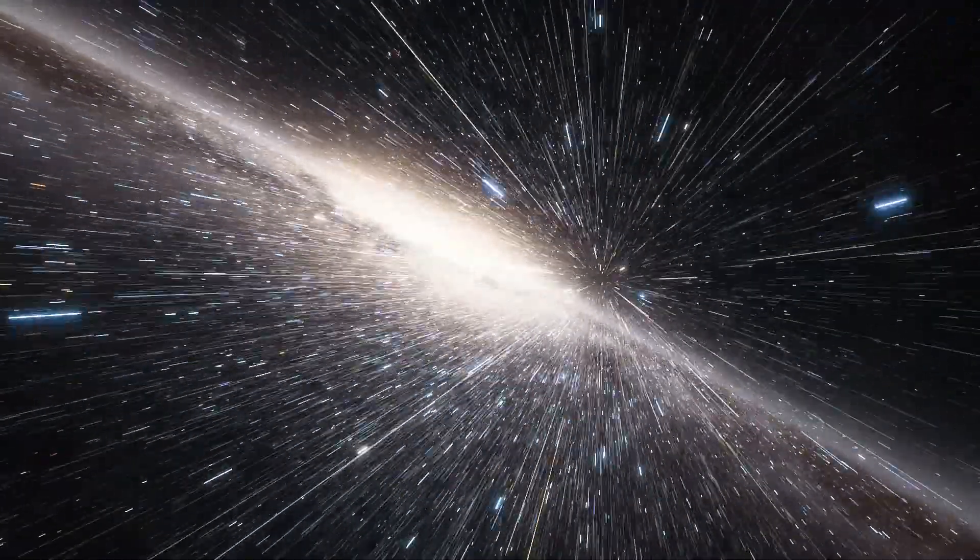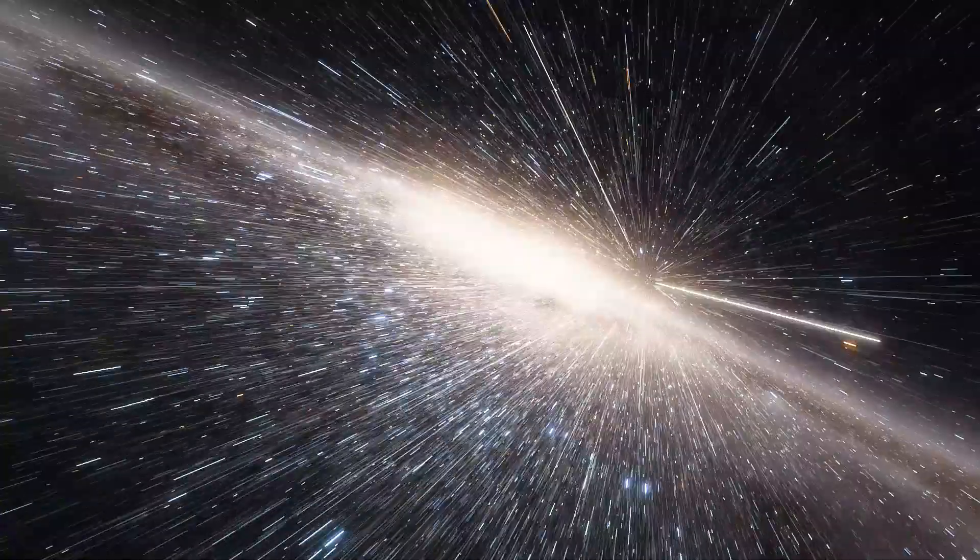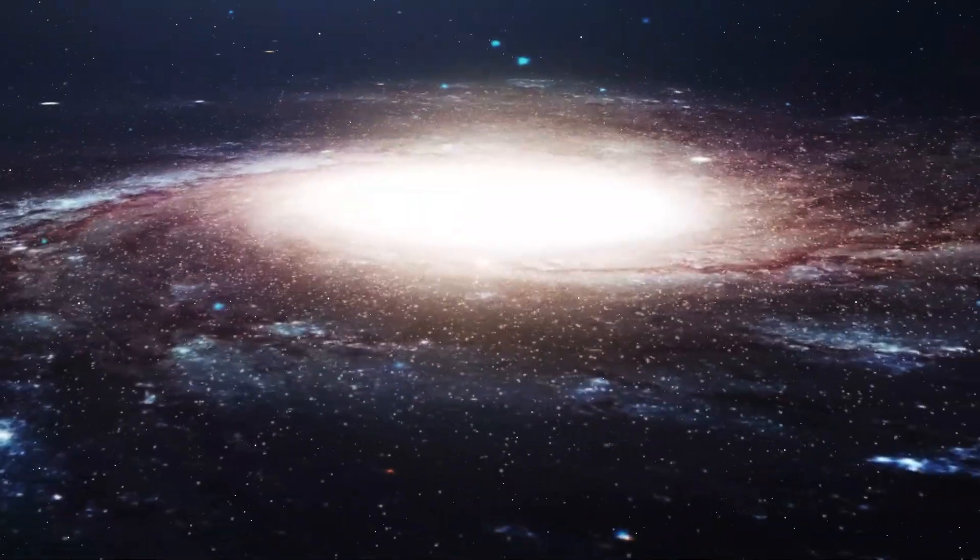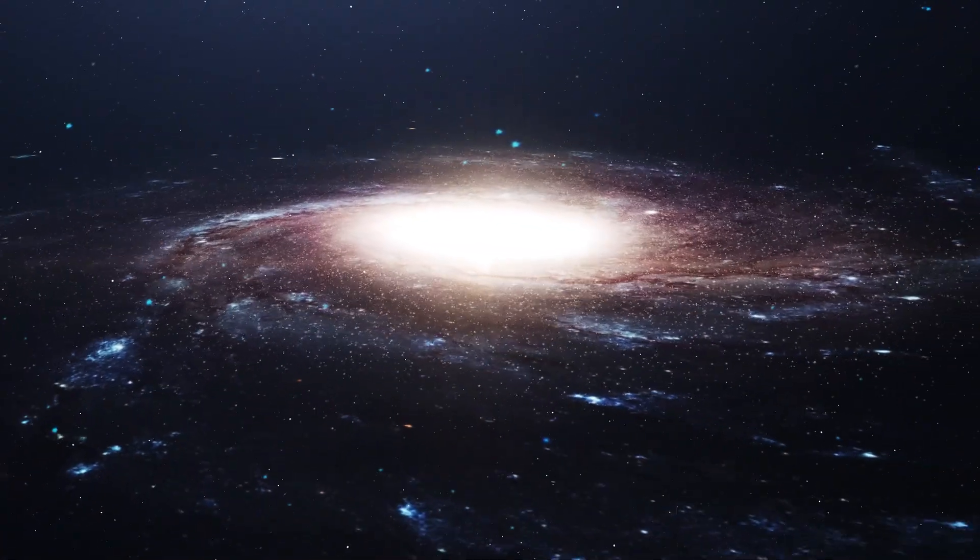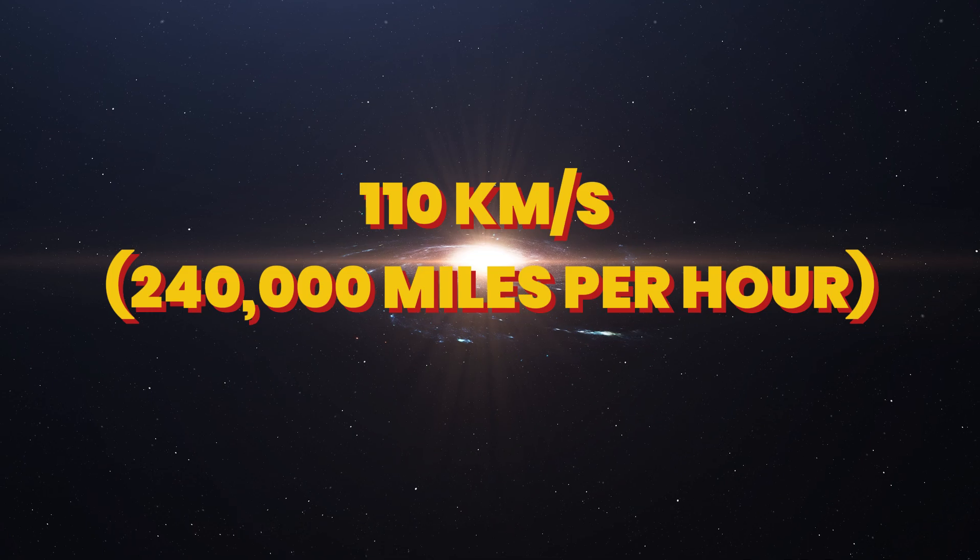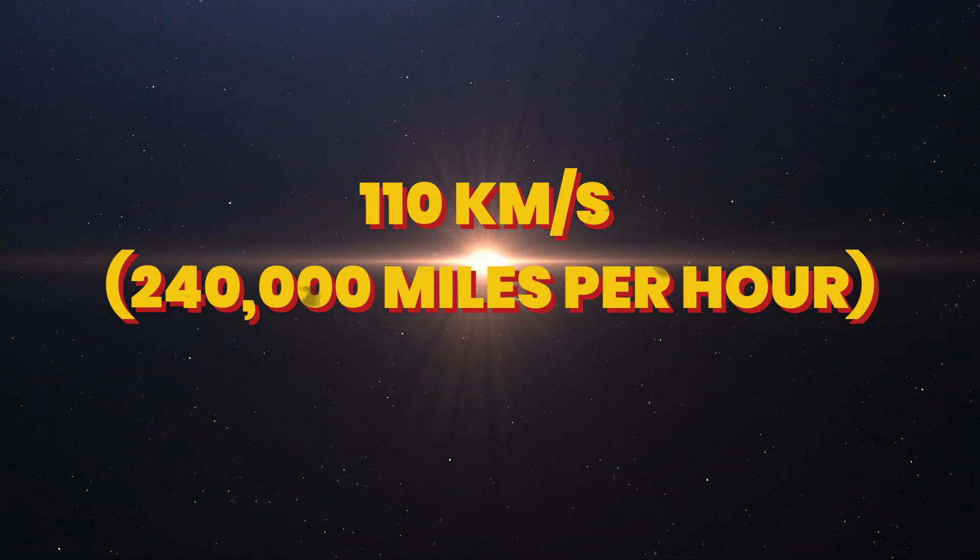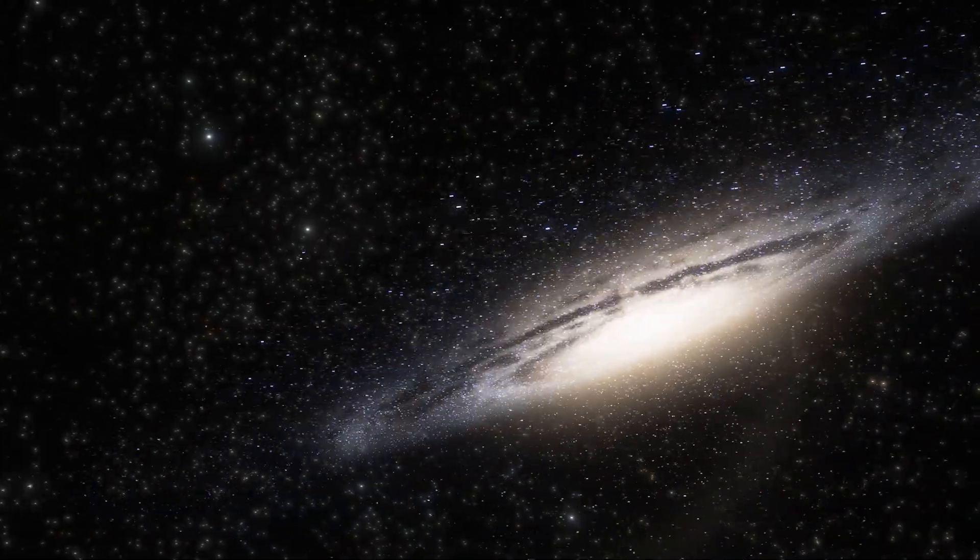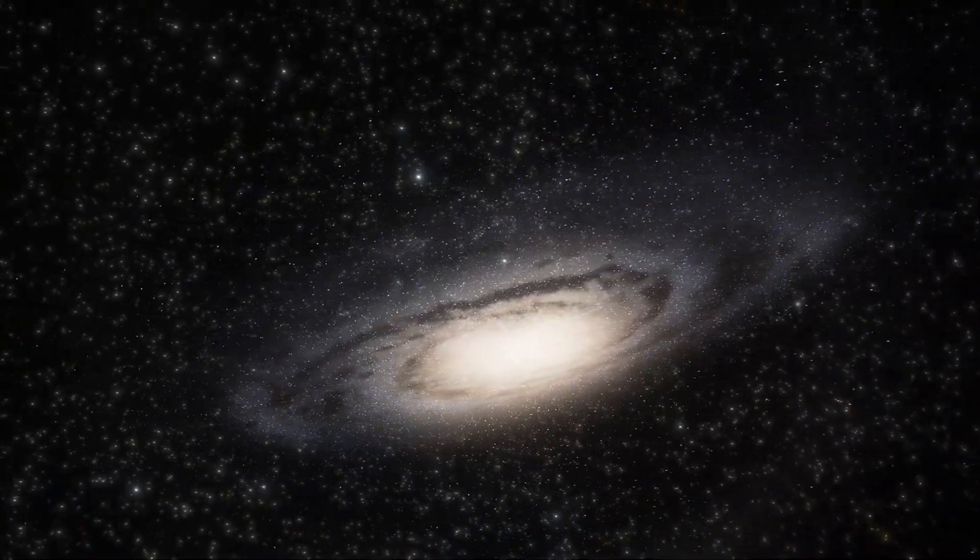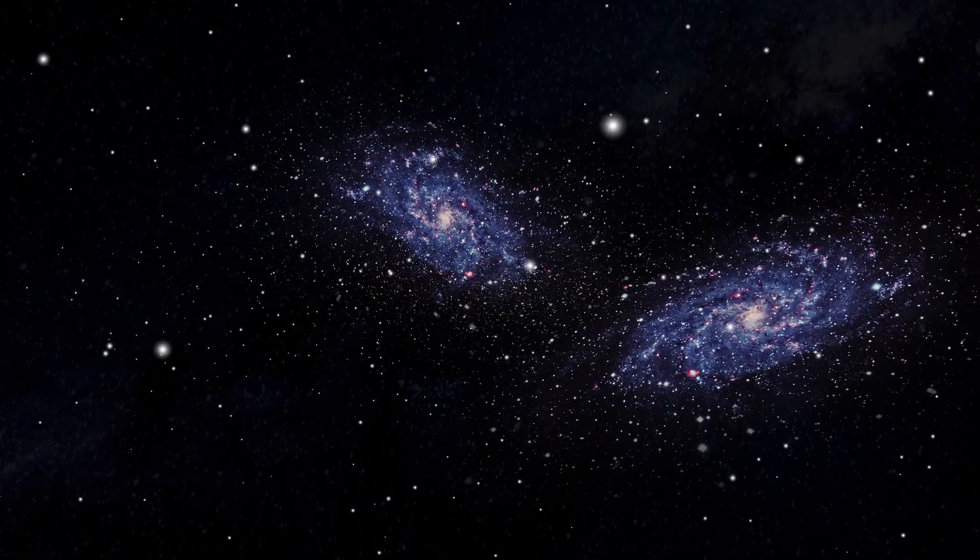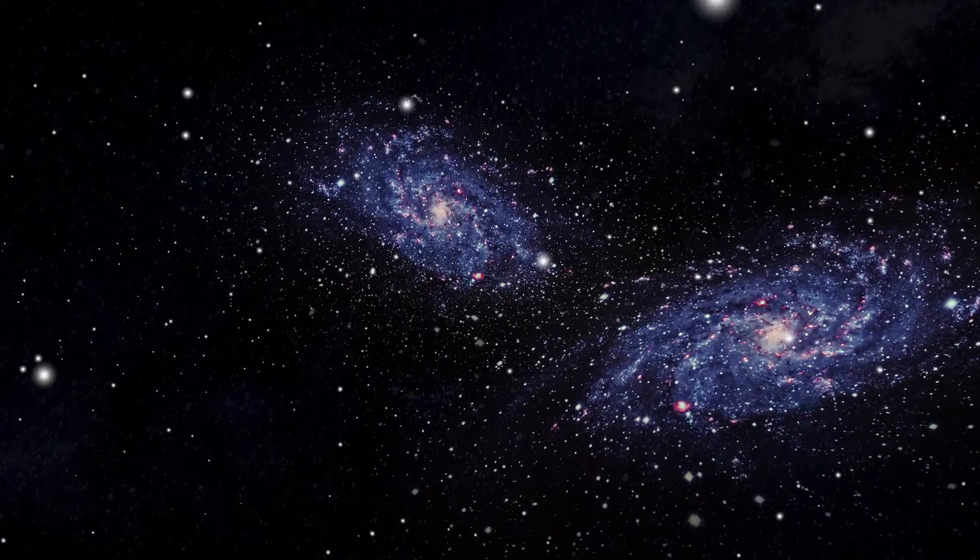That's still only a fraction of all of its stars, but it allows astronomers to study its stellar population up close. One of the most dramatic facts about Andromeda is that it's headed straight for us. Unlike most galaxies which are flying away due to the expanding universe, Andromeda is actually blue-shifted. It's moving towards the Milky Way at about 110 kilometers per second, or 240,000 miles per hour. Don't panic, it's still 2.5 million light-years away, so this cosmic rendezvous won't happen tomorrow.